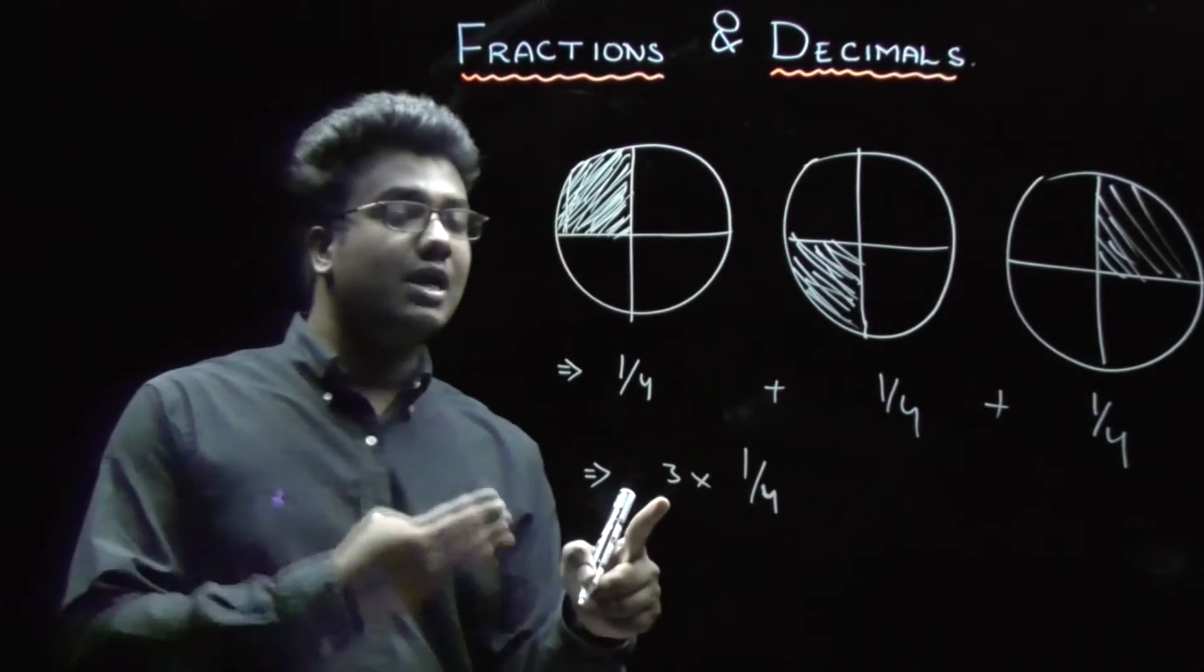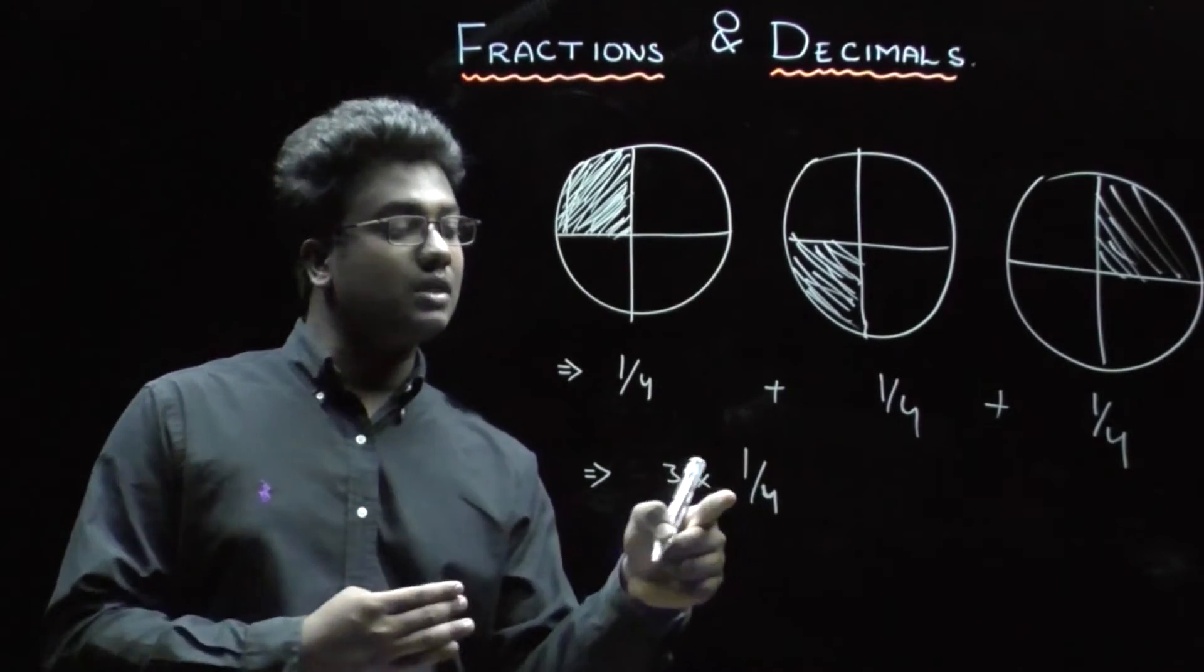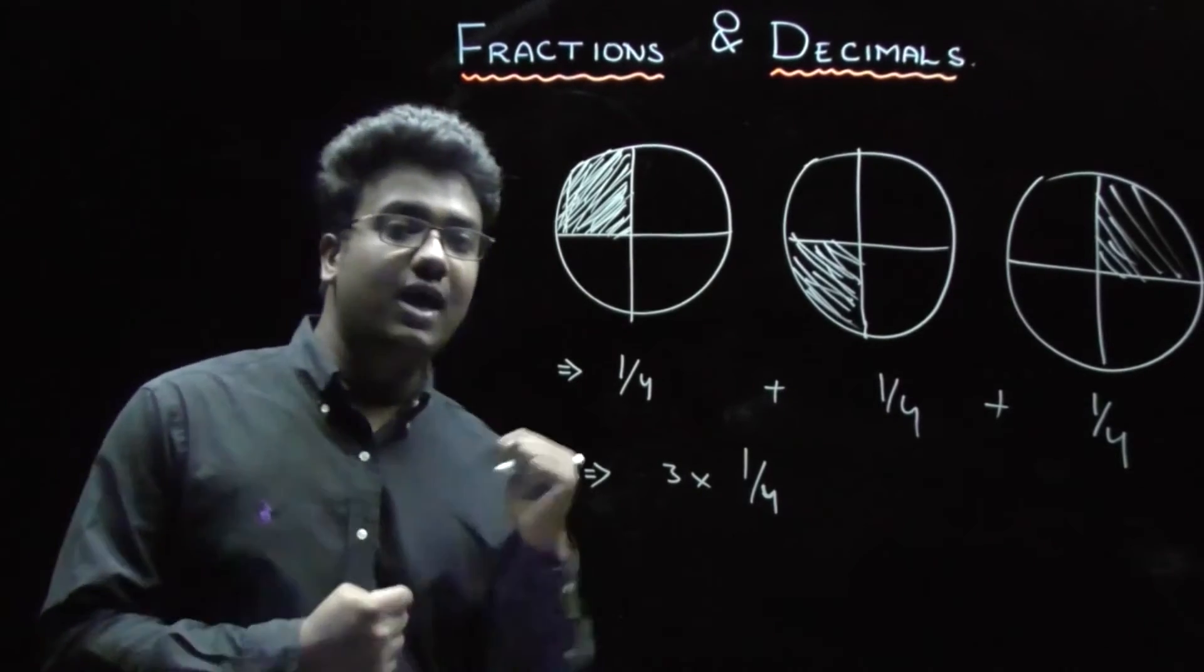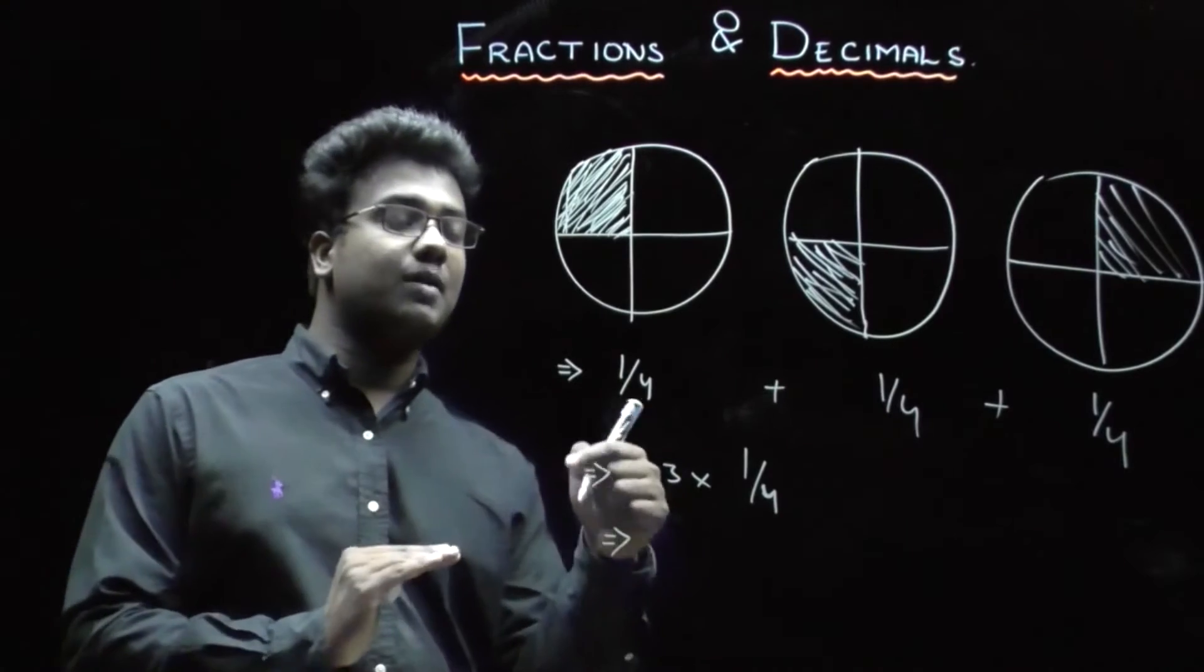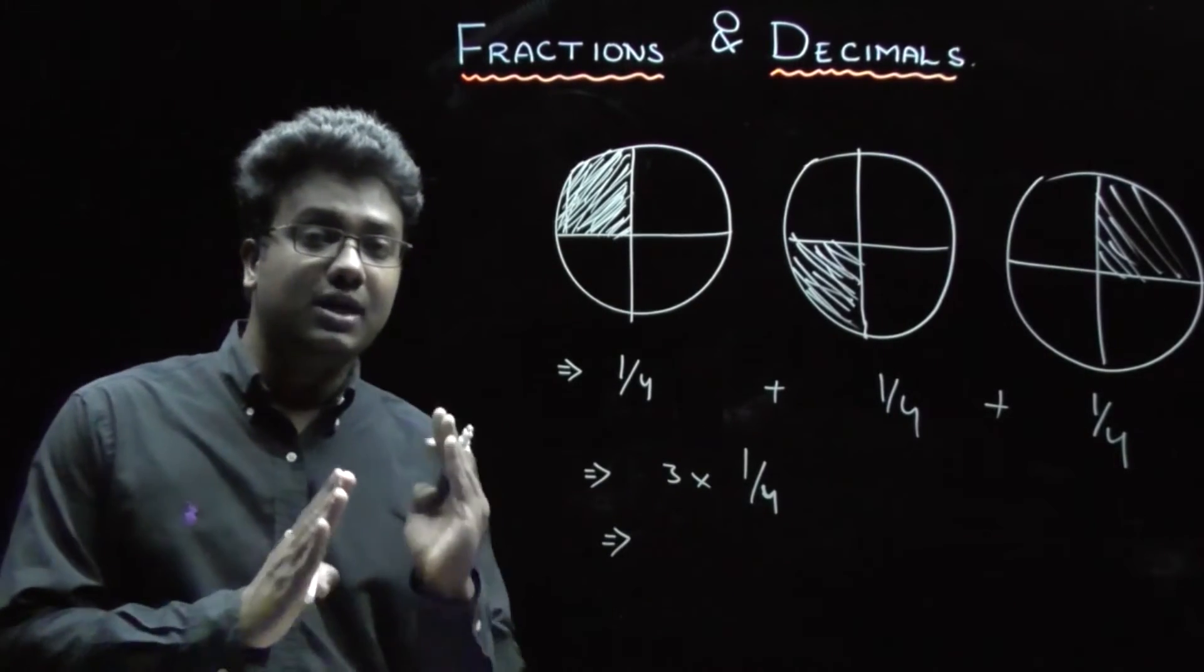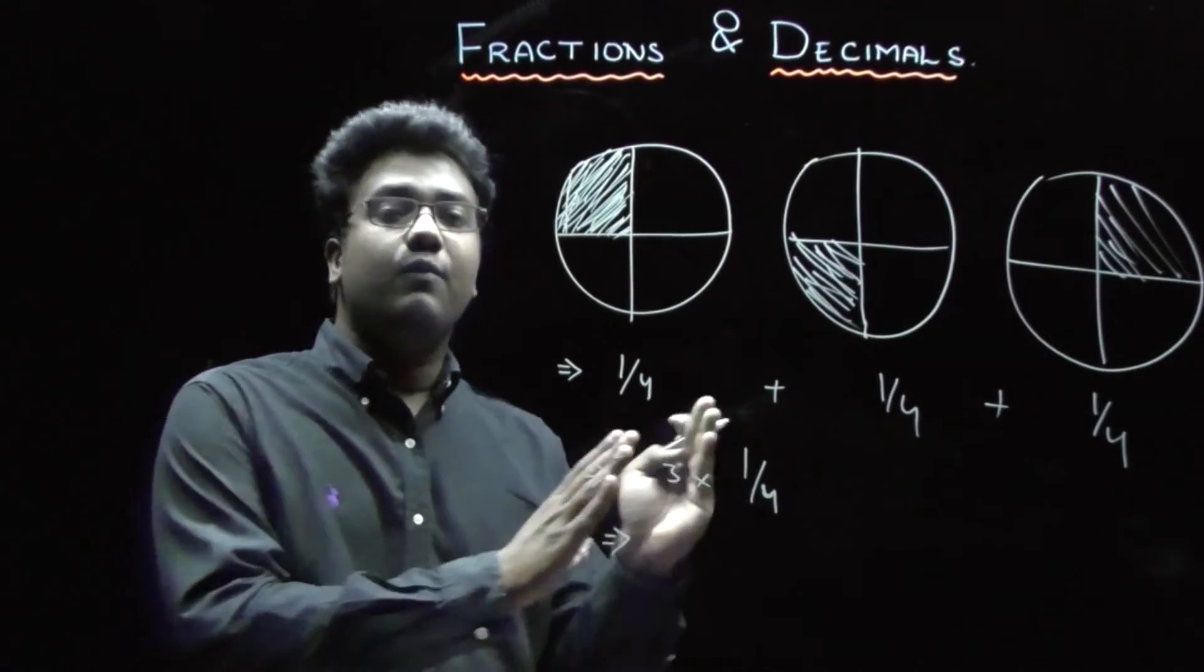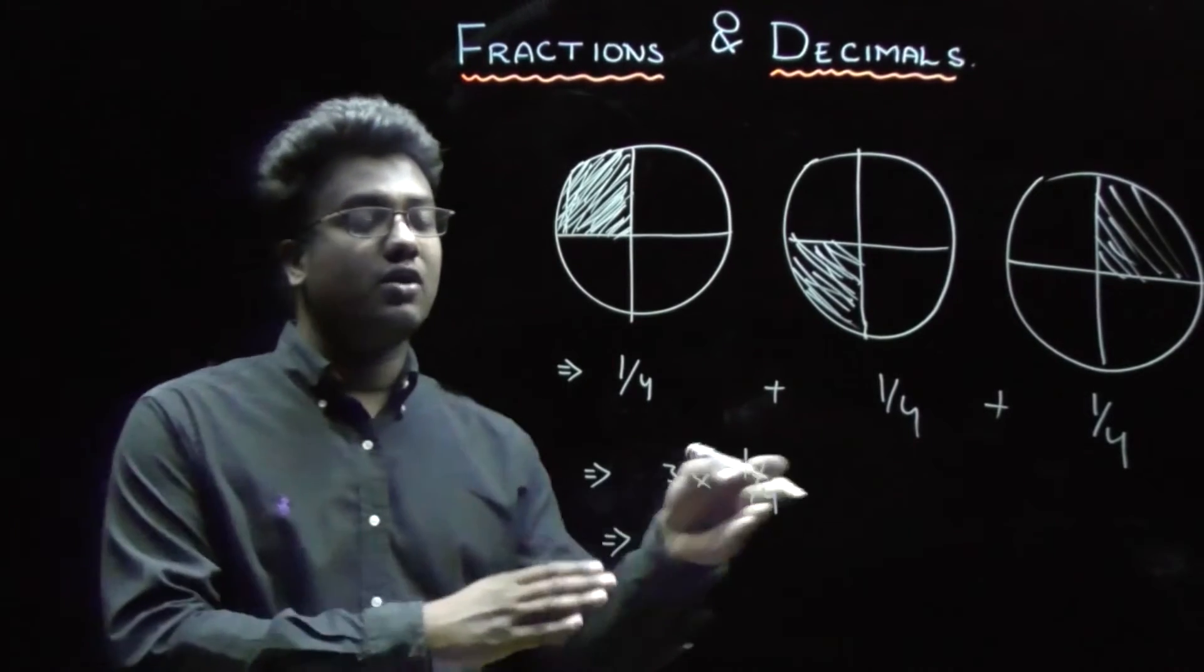Here, if you observe, whole number 3 is being multiplied with a fraction 1 by 4. So, what can be done? The steps you need to follow whenever a whole number is multiplied with a fraction is, always multiply the whole number with the numerator. Numerator of the fraction.